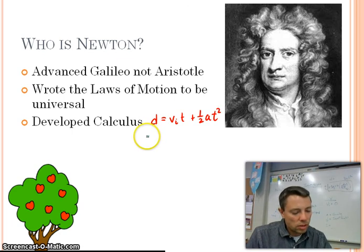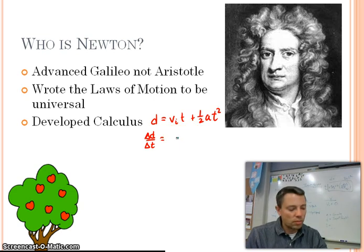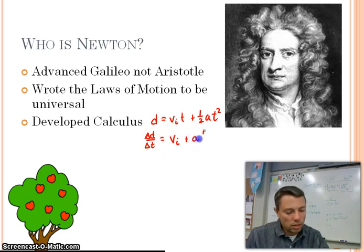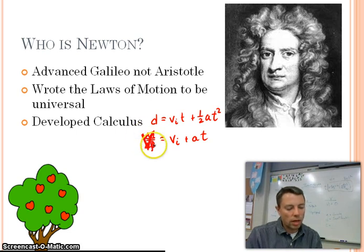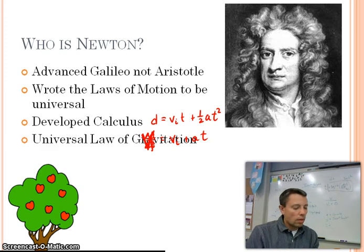So he said, well, if you do a change in d with respect to time, or delta d over delta t, you're actually taking the derivative of this function, because he said, let's limit this and let it be small. That would give us vi plus a t, and this is nothing more than vf. Okay, so that's how that equation came, and then he said, if you do another derivative of it, you're back to your acceleration. So again, he's the guy who developed all that.